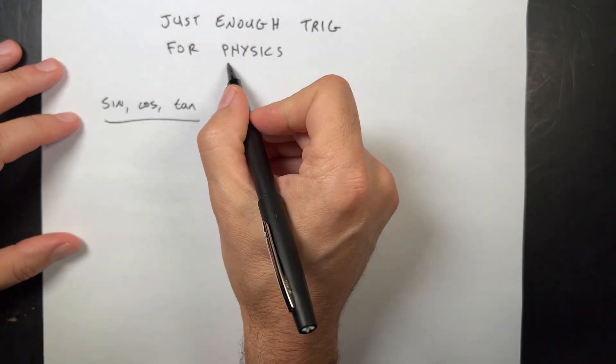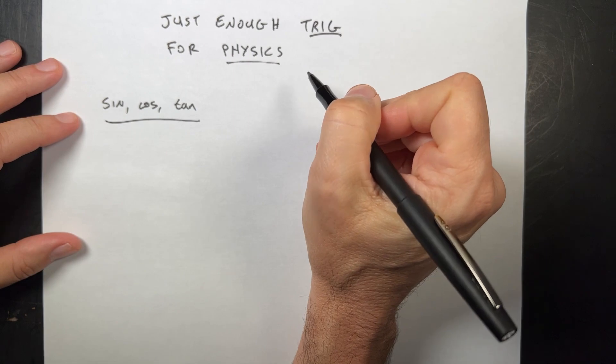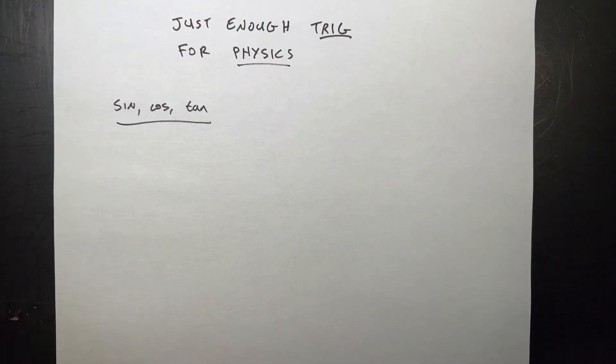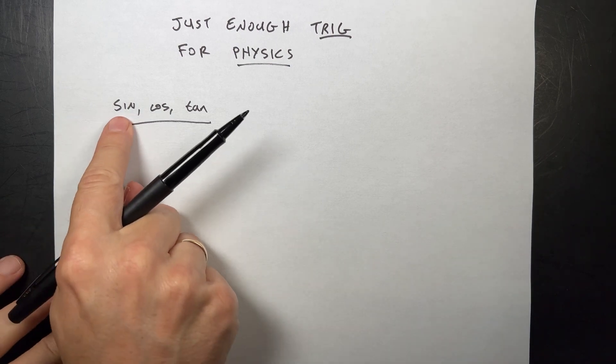For physics you need some trig, but I'm just going to show you the bare minimum that you need. I really want to focus on what is going on here and why we need it. Don't worry about double angle formulas, law of sines and cosines. All we need to know and understand is sine, cosine, and tangent. I think you're going to be fine.